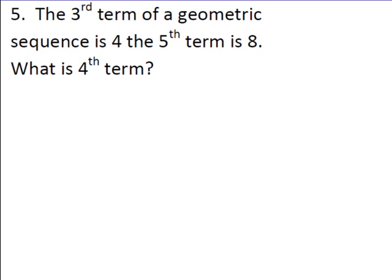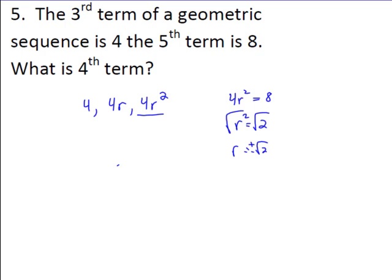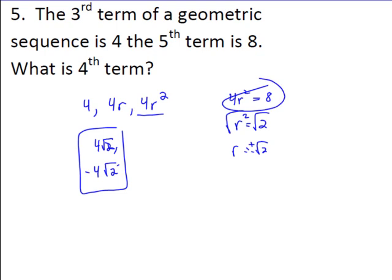A similar problem using geometric sequences: the third term is 4 and the fifth term is 8 — find the fourth term. The fourth term is 4r and the fifth term is 4r squared. So 4r squared = 8, which means r squared = 2. Taking the square root, r = plus or minus square root of 2. The fourth term is therefore either 4 times square root of 2 or negative 4 times square root of 2 — both are valid.